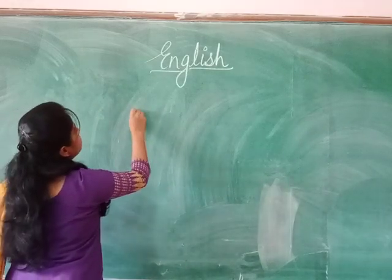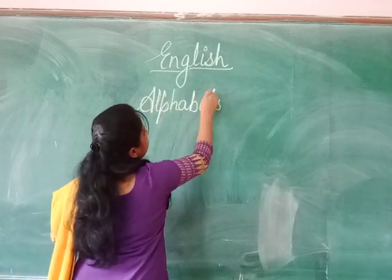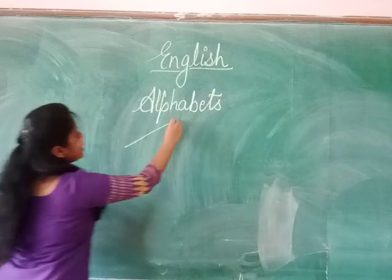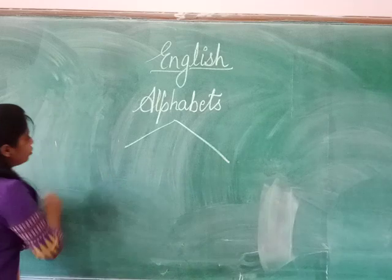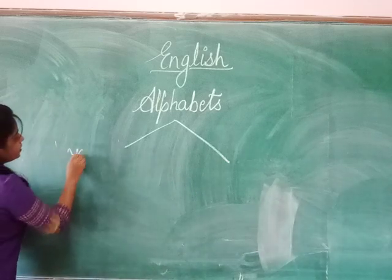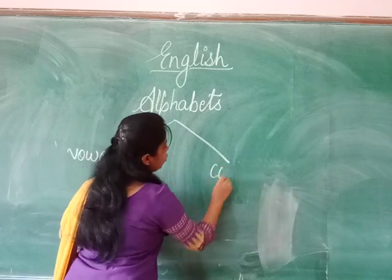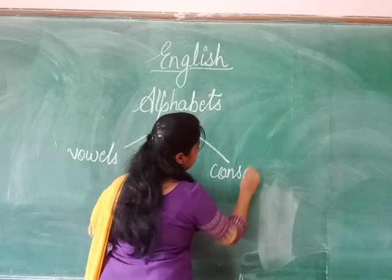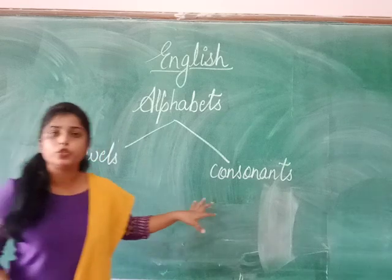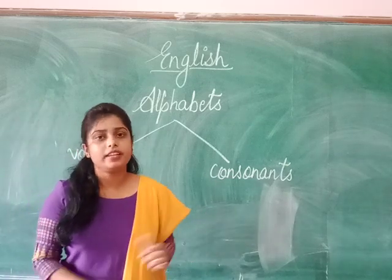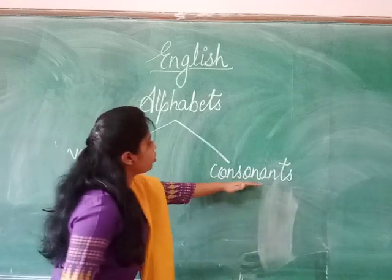So, all the alphabets are categorized in two types. One type is called vowels and the second type is called consonants. You have studied this already in class 1, but here we are just revising that.